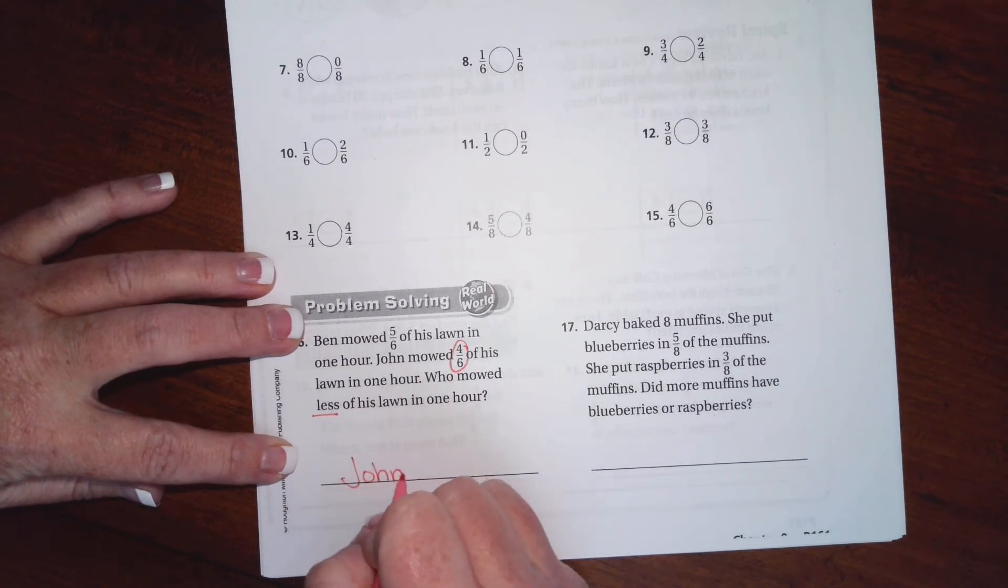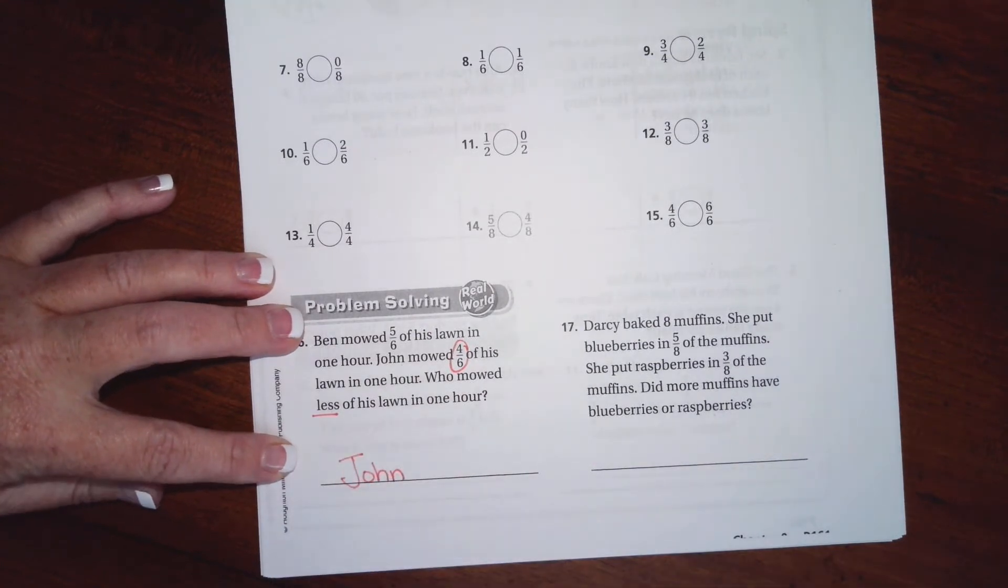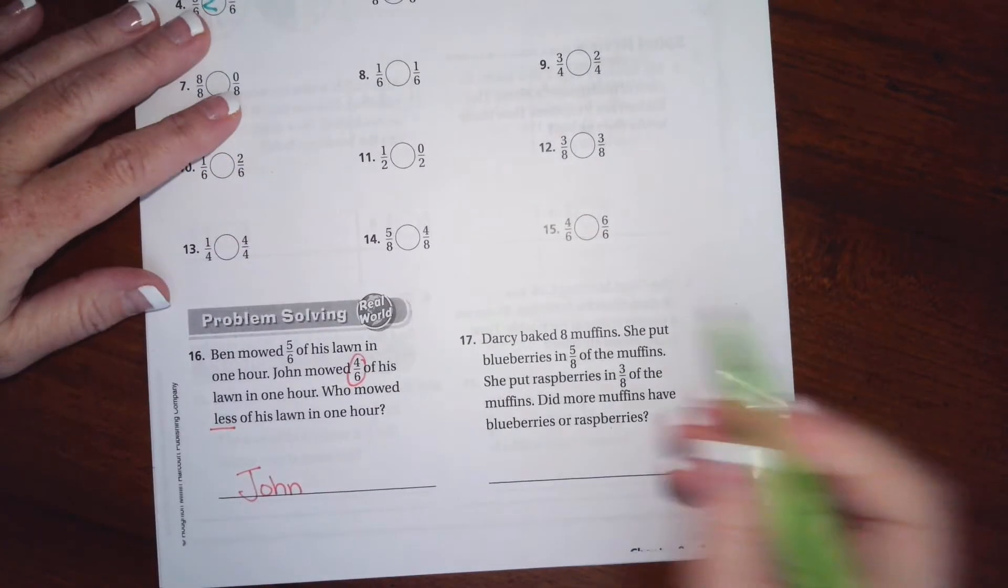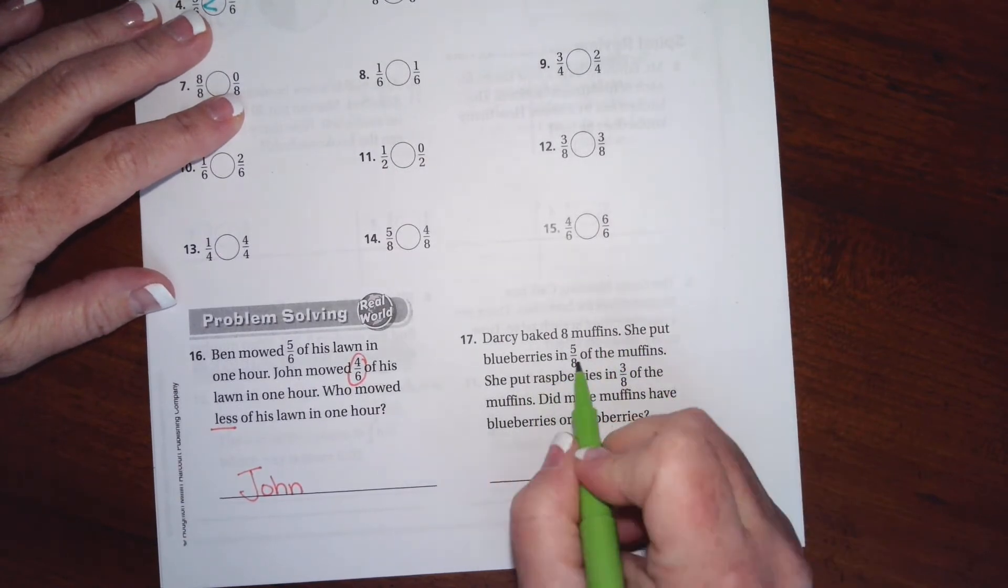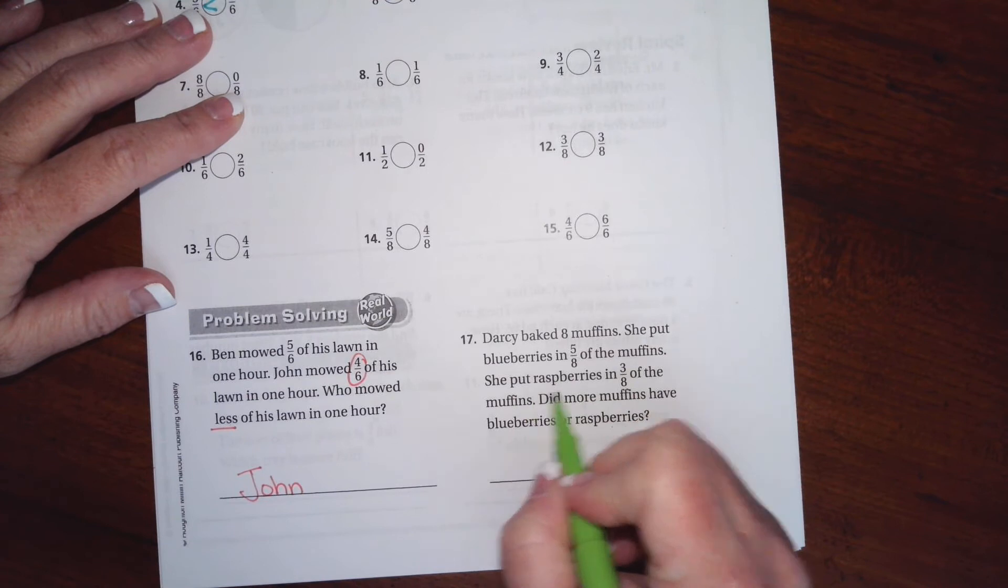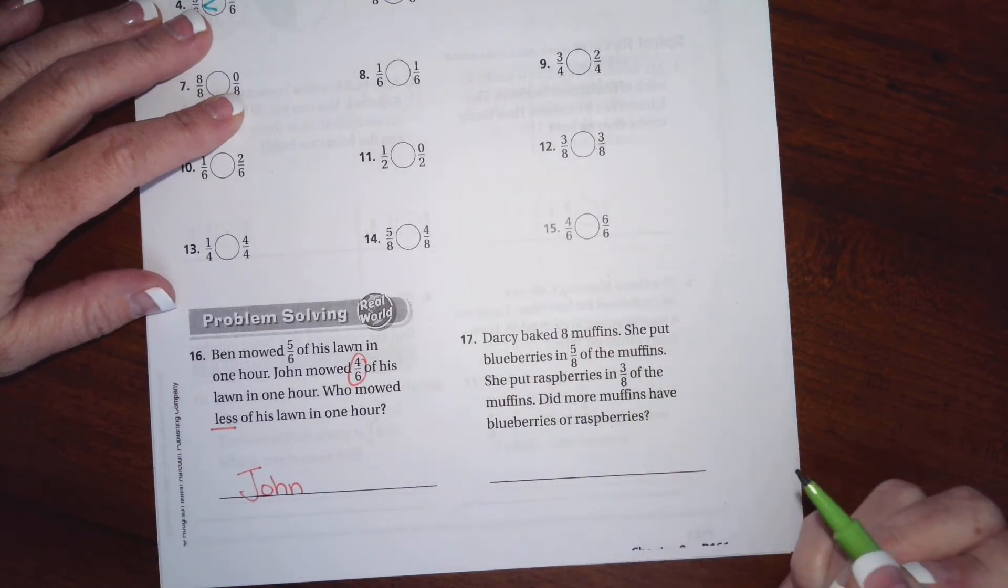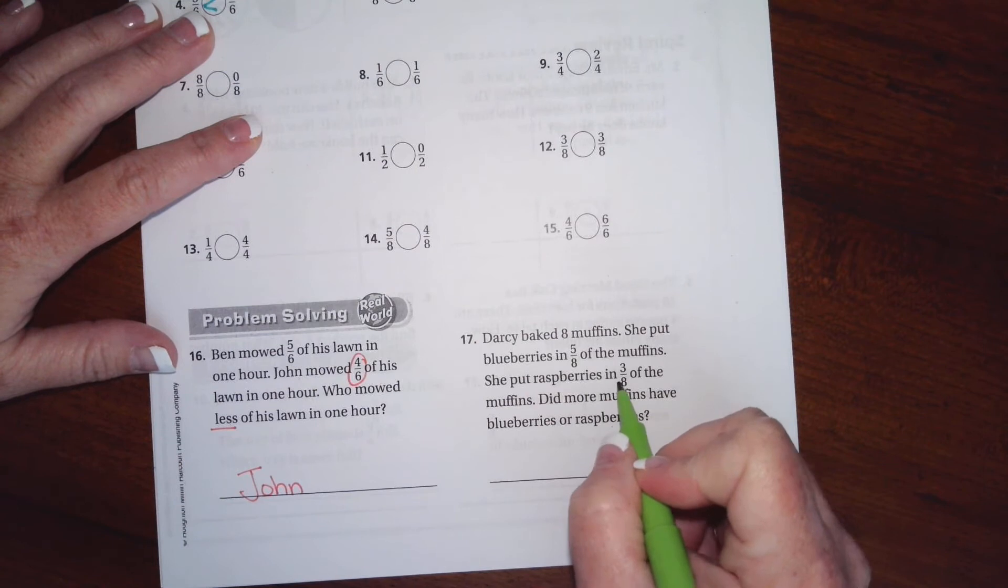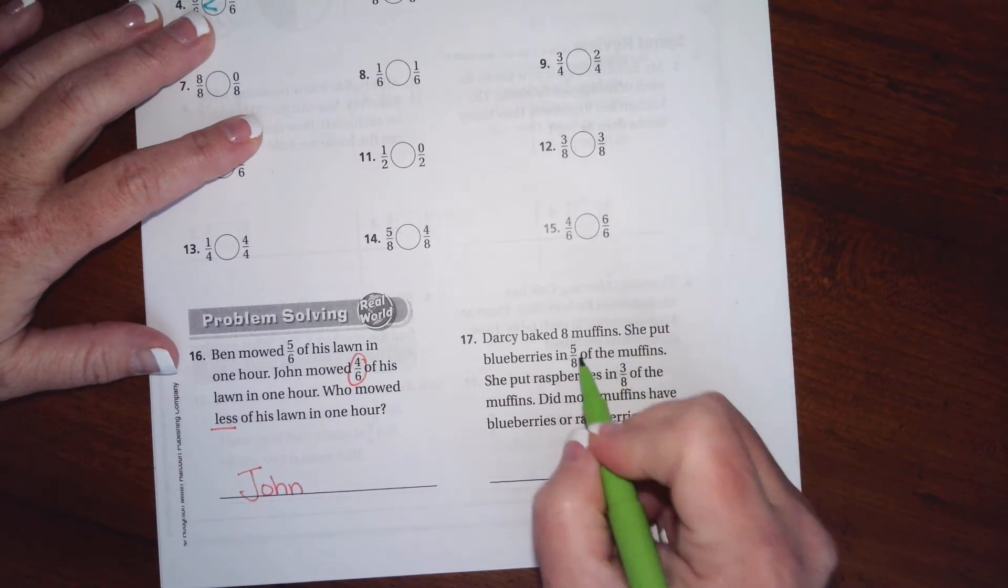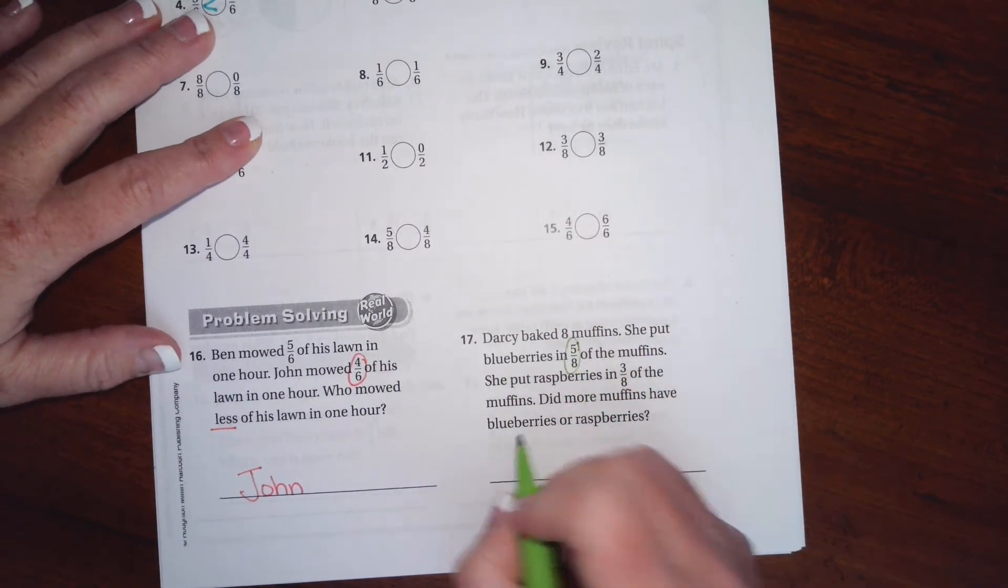All right, Darcy baked eight muffins. She put blueberries in five eighths of the muffins. She put raspberries in three eighths of the muffins. Did more muffins have blueberries or raspberries? So the denominators are the same, we're looking at the one with the bigger numerator. That's going to be blueberries.